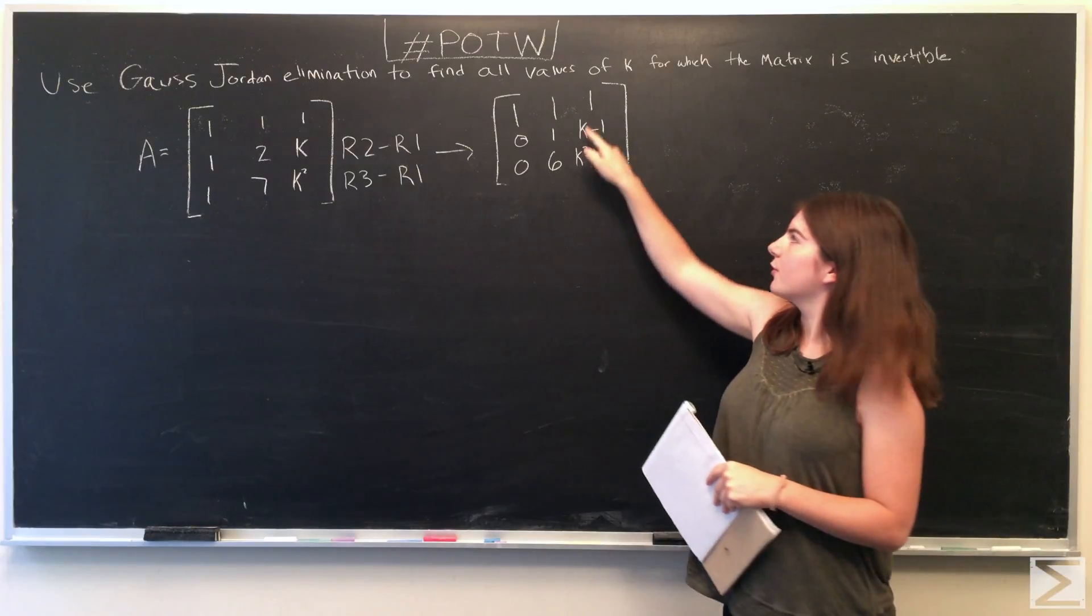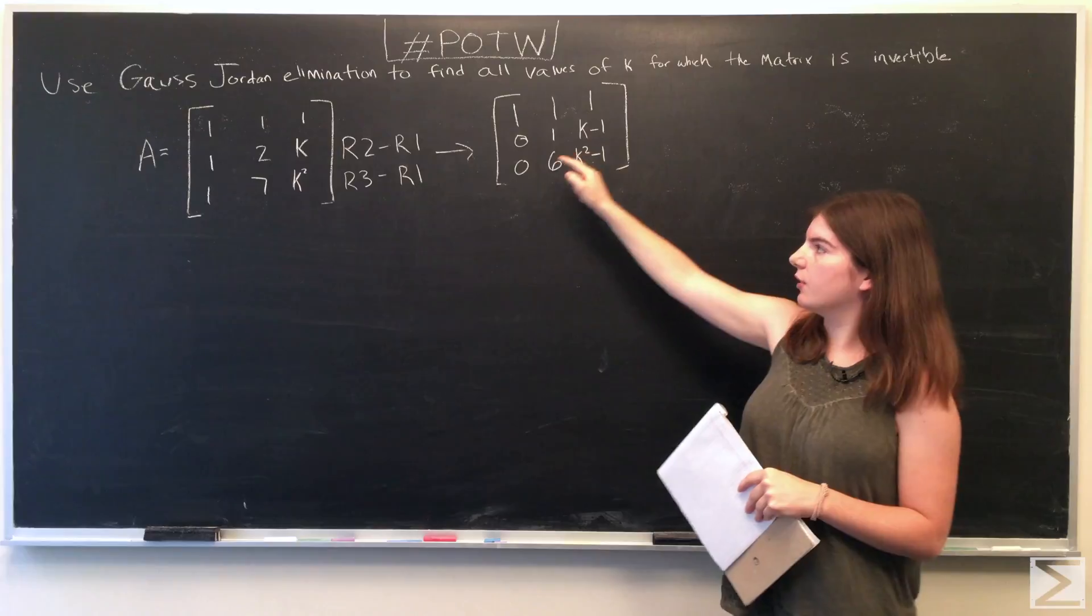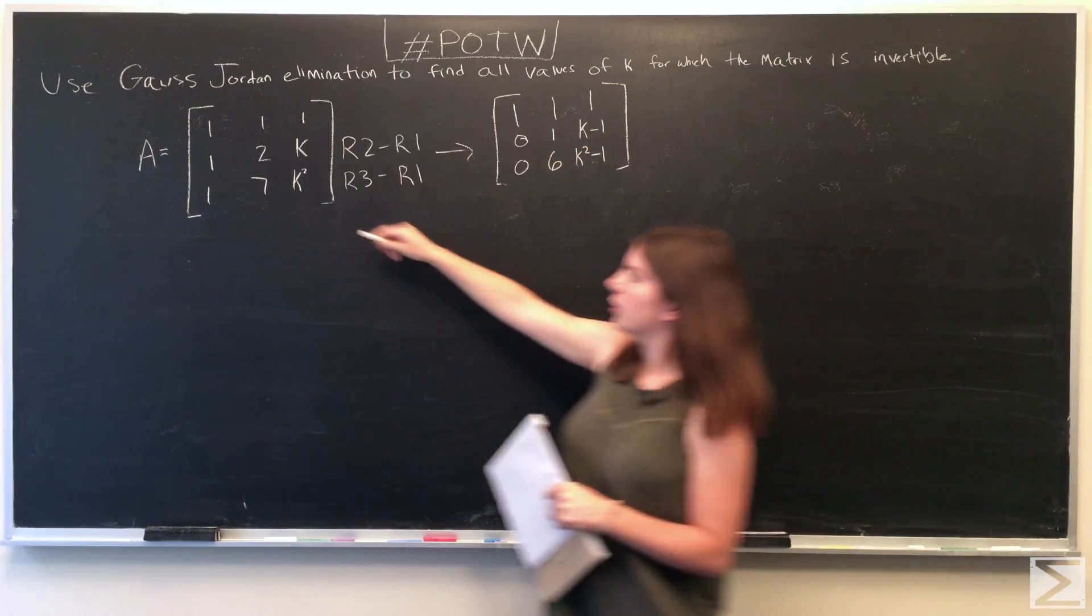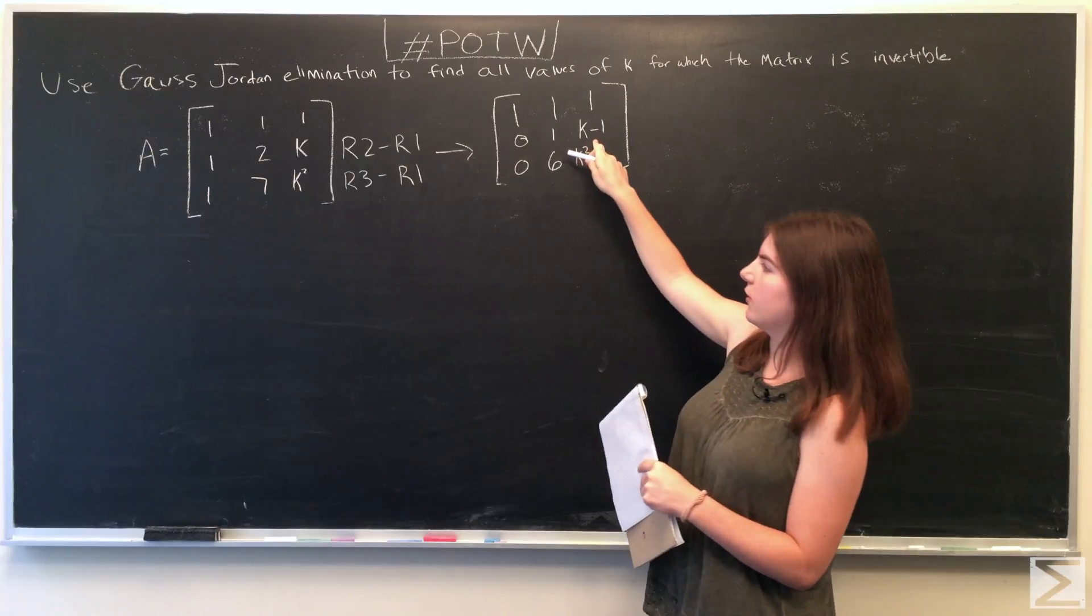All right, we kept the first row exactly the same. And then for the second row, we subtracted the first row from the second row. So we had 1 minus 1, 2 minus 1, and k minus 1 replace the second row.